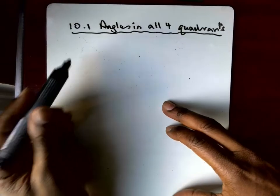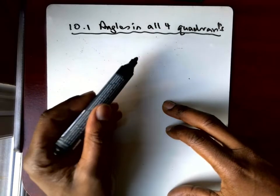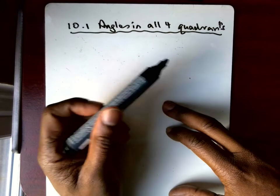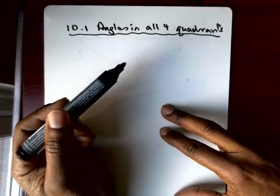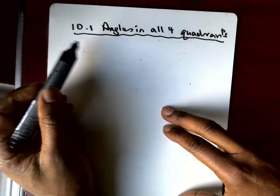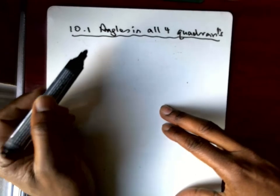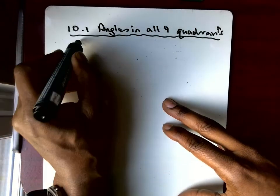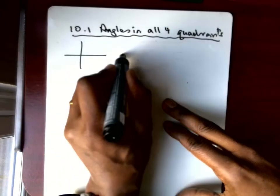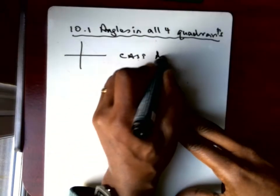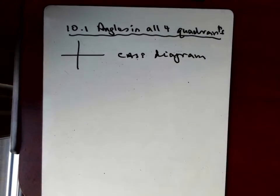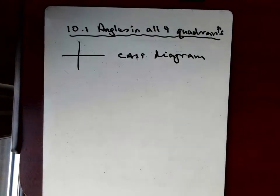Section 10.1 in the book is labeled angles in all four quadrants, and basically all it is is summarizing everything that's going on in the graphs of sine, cosine, and tangent in a little diagram called a CAST diagram. The diagram looks like this, and this diagram can easily help us find all of the different solutions to a trig equation without having to draw the graphs.